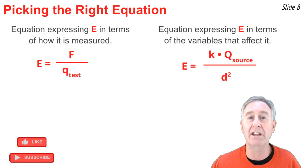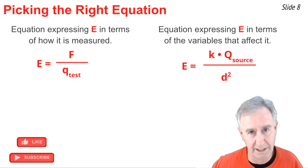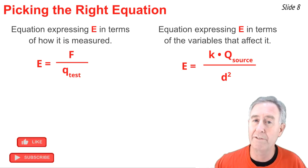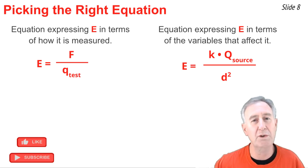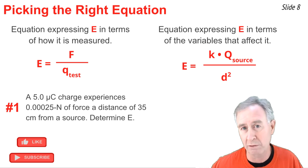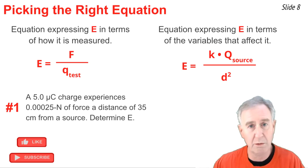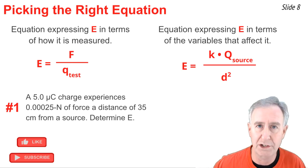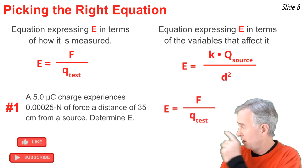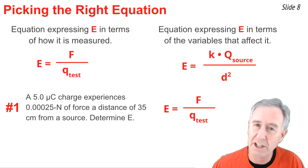The first equation expresses the electric field in terms of how it is measured — by a test charge experiencing a force. The second equation expresses the electric field in terms of the two variables that affect it: the q of the source and the distance from the source. For example, if a 5.0 microcoulomb charge experiences a 0.00025 newton force at a distance of 35 centimeters from a source, you would use the first equation — because the charge given is the test charge experiencing the force.